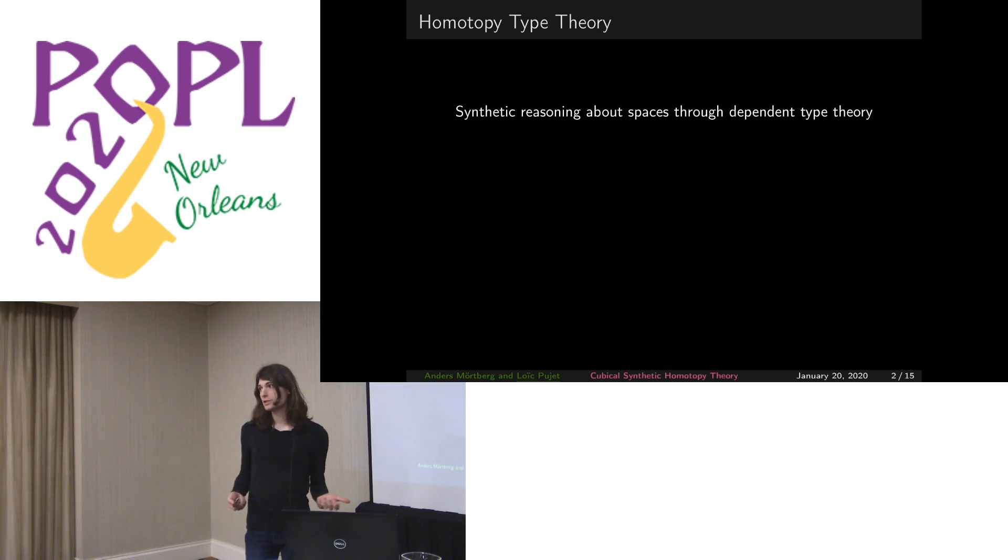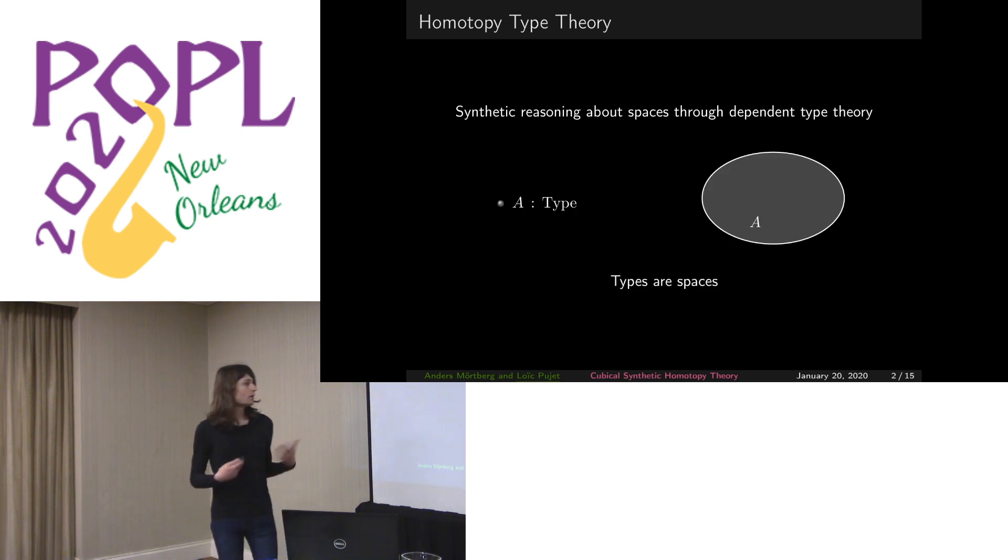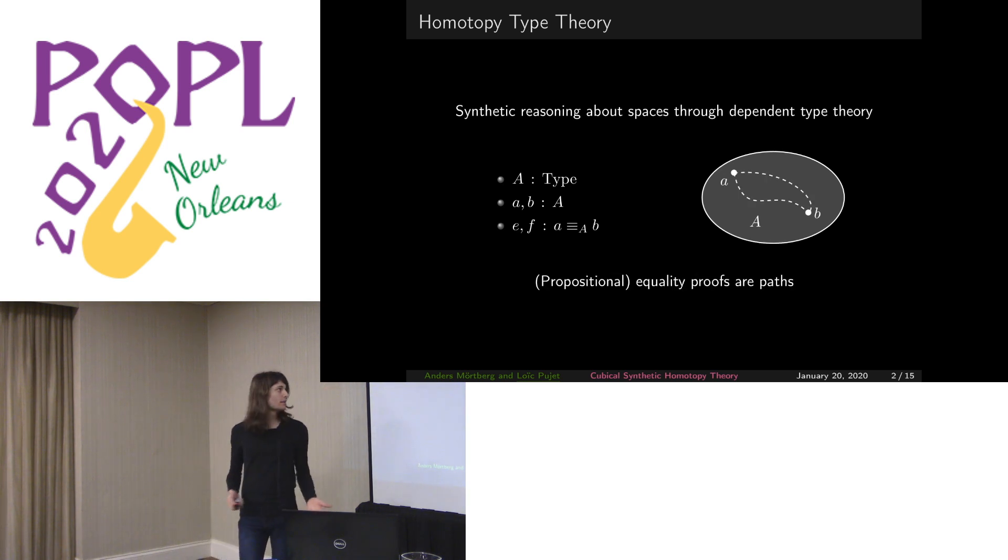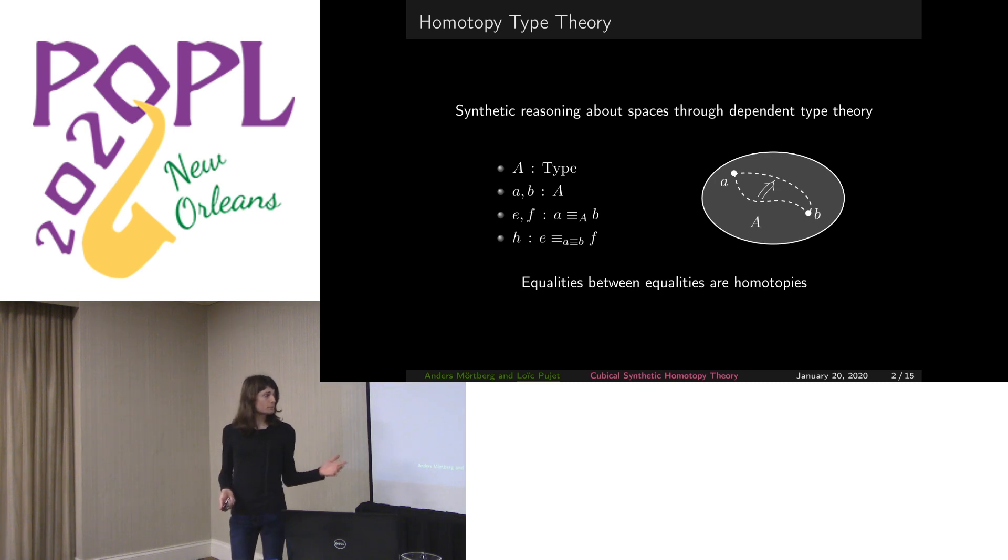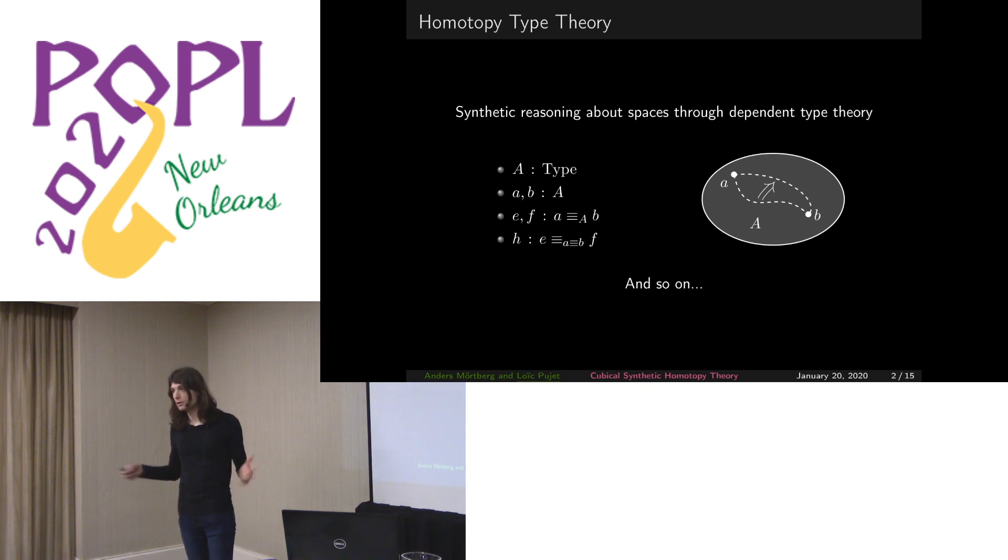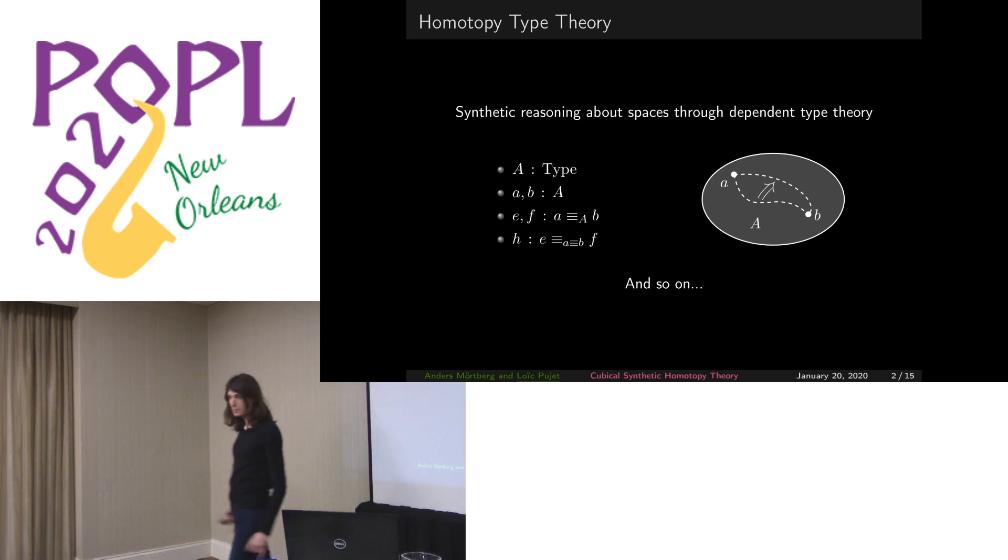The usual interpretation goes like this: a type would be a space, terms of type A would be points inside the corresponding space, propositional equality proofs between A and B would be paths between the two corresponding points. Proofs of equalities between equalities would be homotopies and so on for higher homotopies. Please note that I'm using triple equal for propositional equality, which is a convention in cubical and will be important later on.